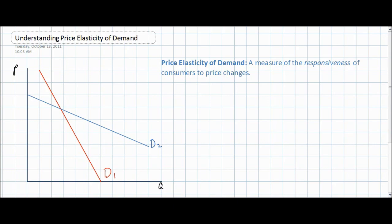There's a simple formula for calculating the price elasticity of demand. PED is always equal to the percentage change in the quantity demanded of a good in response to a percentage change in price. PED is not the same as the slope of the demand curve. The slope of a demand curve is always the change in quantity divided by the change in price, but in this case we are comparing percentage changes. So to determine PED we must always calculate the percentage change in quantity resulting from a particular percentage change in price.